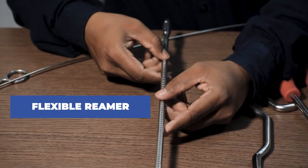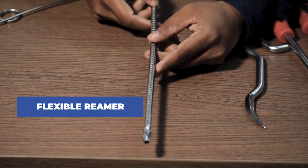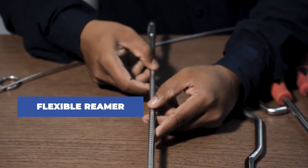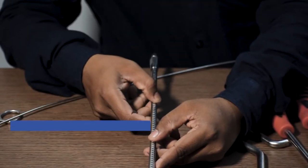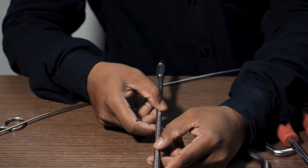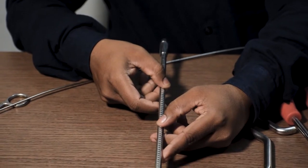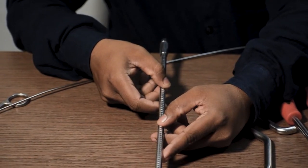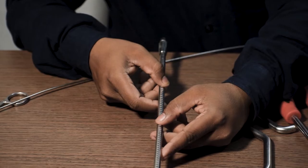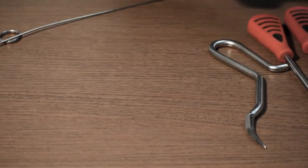This is a flexible reamer. It has the same function like a hand reamer. This comes in the difference of 0.5 mm. For example, if the nail used is of 8 mm, so we have to ream 1.5 mm extra than the diameter of the nail.